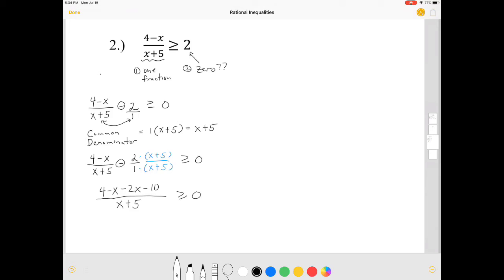Last step, simplify the top. So we have x plus 5 on the bottom, greater than or equal to 0. And we have minus x minus 2x is minus 3x. 4 minus 10 is minus 6. So now here is the expression that I need and the expression that I will use to do the rest of this problem. So now I have one fraction on the left side and 0 on the right side. We are ready to go.